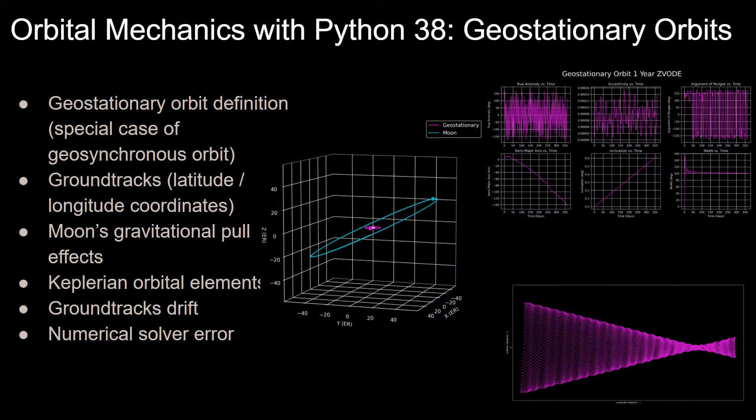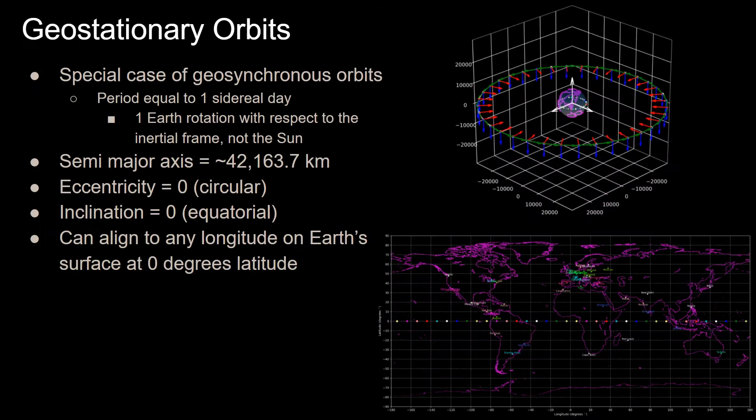I'll also cover how the Moon's gravitational pull impacts these geostationary orbits, specifically covering their Keplerian orbital elements and ground track drifts over time, and finally, how numerical solvers can give different results for the Keplerian orbital elements over time for small perturbations like the gravitational pull of the Moon.